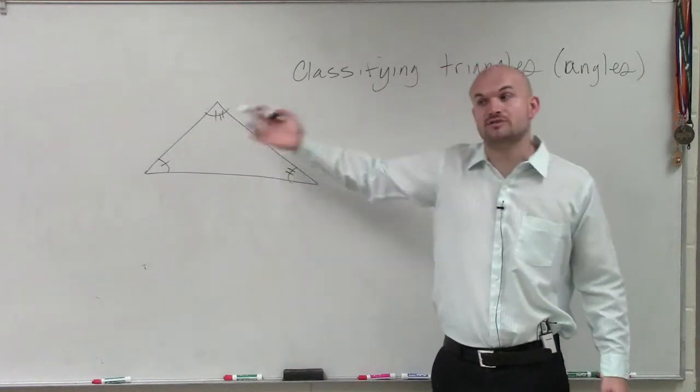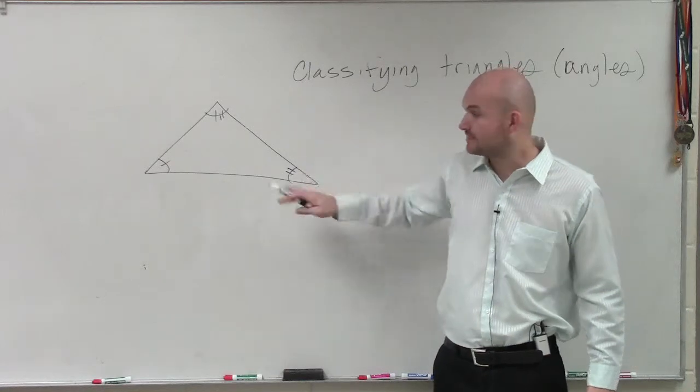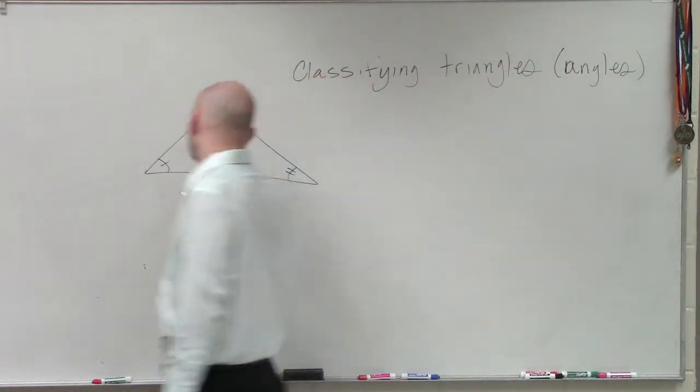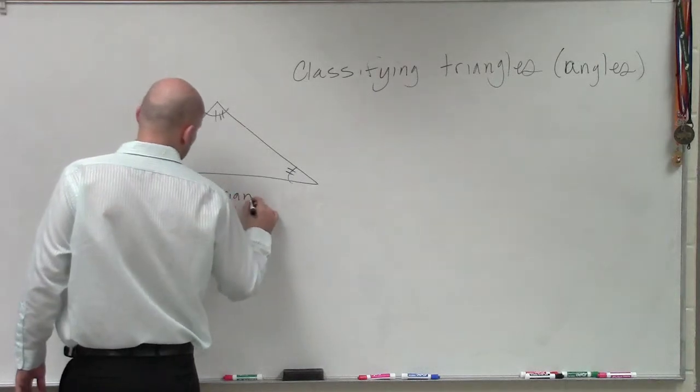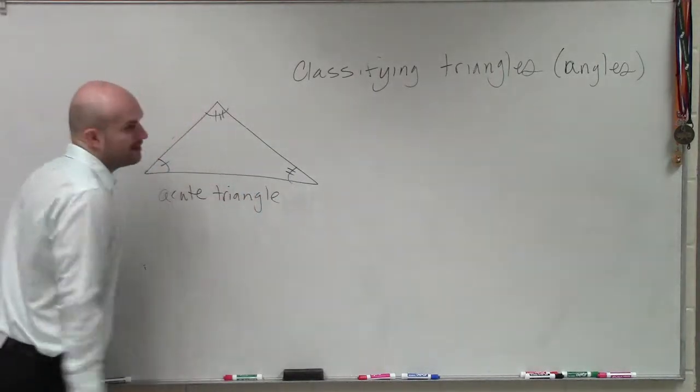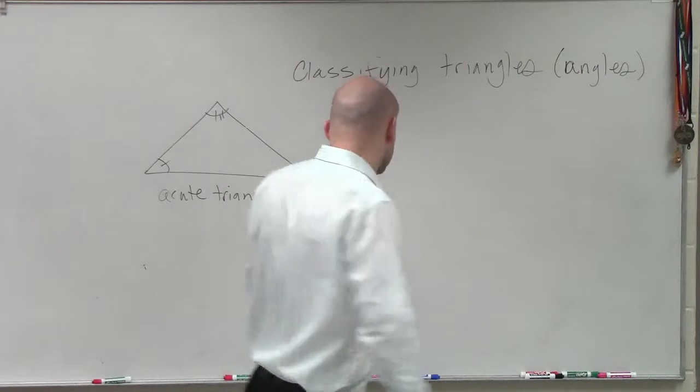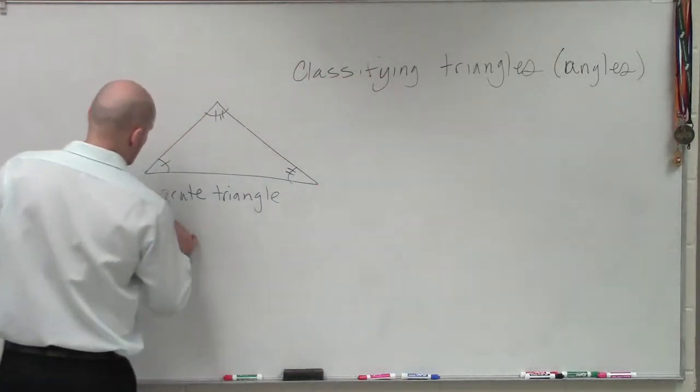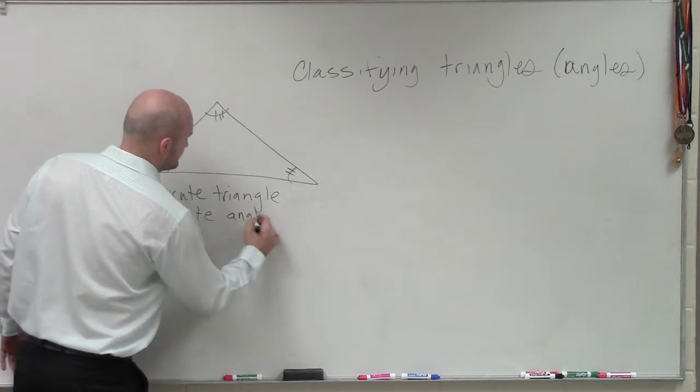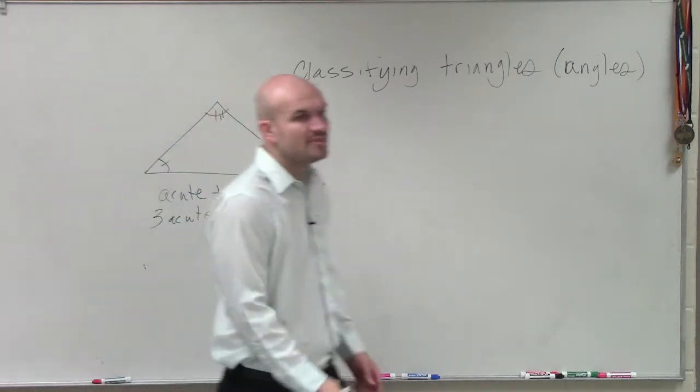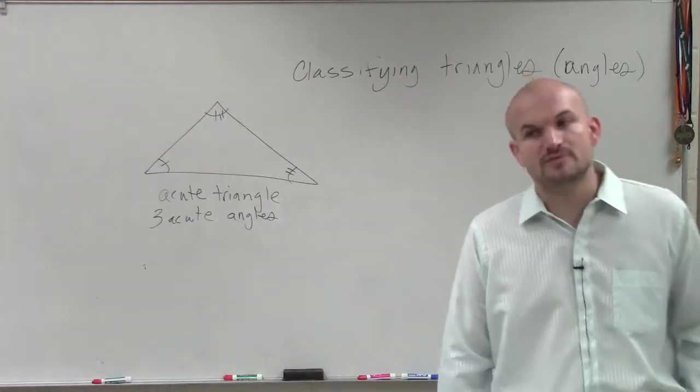One has one tick mark, two tick marks, three tick marks. This is what we call an acute triangle. So when it has three acute angles that are not equal in measure, that is what we call an acute triangle.